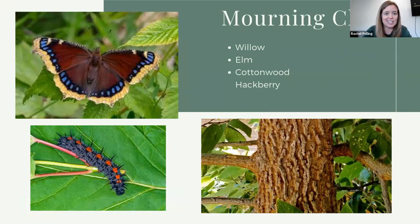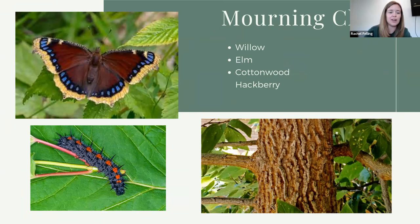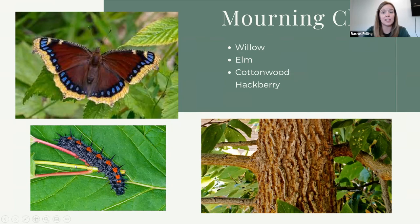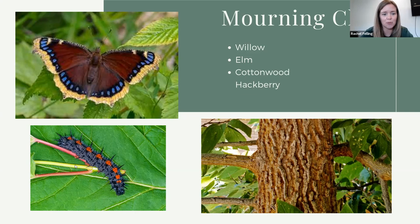Let's take a look at the mourning cloak. I have a special place in my heart for mourning cloaks — they're one of the very earliest butterflies that emerge in the spring. You see these guys sometime in April, one of the first ones that come out. And they're big — three to four inches across. Absolutely gorgeous butterfly. Their colors are a little more subtle than some others, but they are beautiful. And their caterpillar is pretty ferocious-looking.